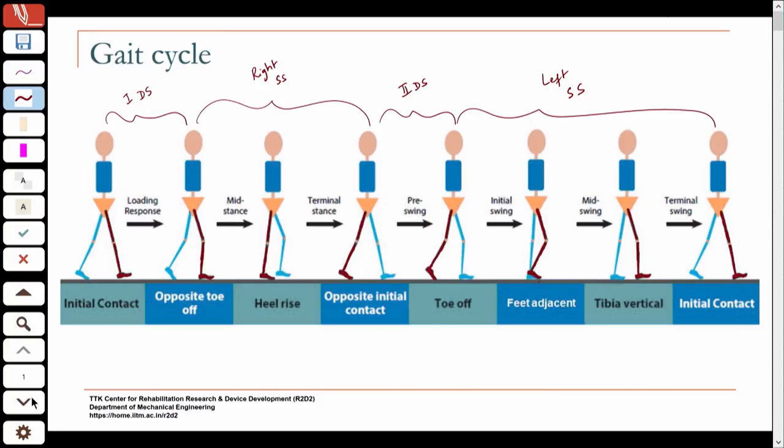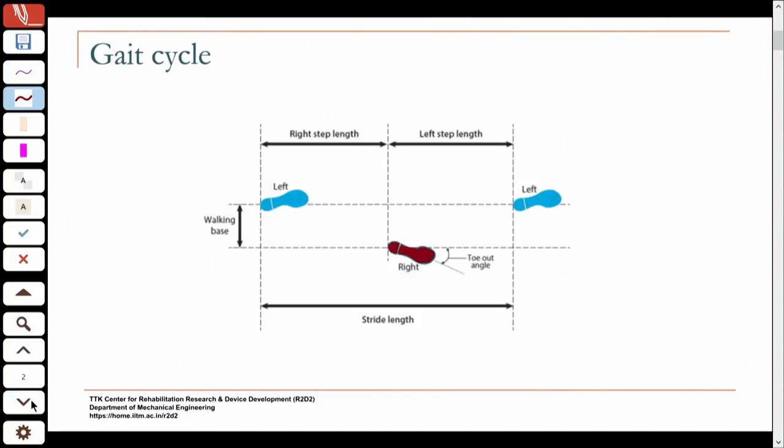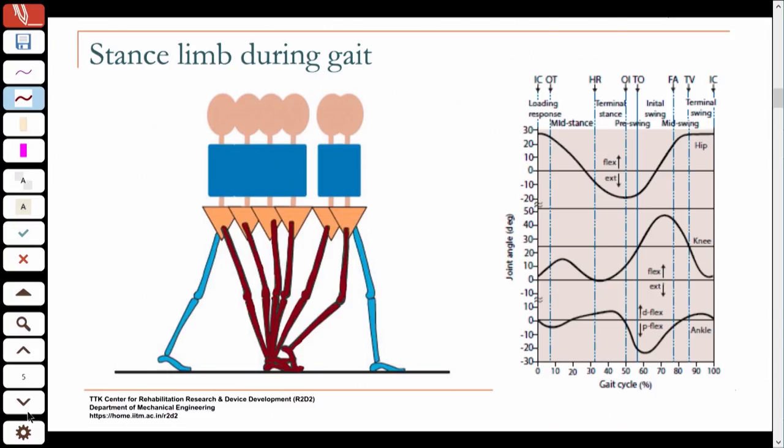There is a lot of coordinated movement happening at the various joints, and we will look at some of the joint motions today — what is happening at the hip, knee, and ankle joints during the various phases of gait.